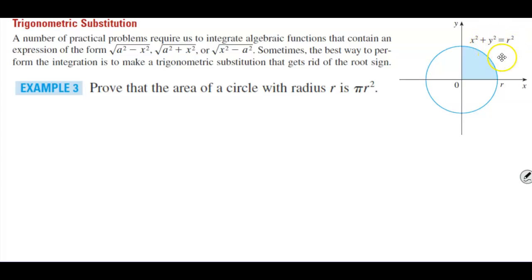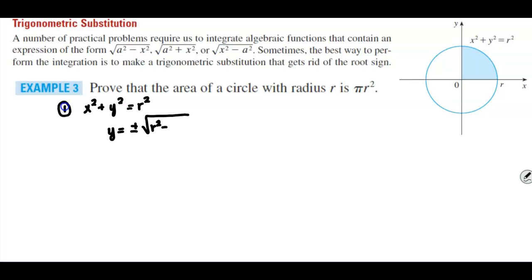Solving that equation for y gives us plus or minus the square root of r² minus x². Because we know that the circle is symmetric with respect to both axes, the total area is four times the area in one quadrant — you can see four pieces within that circle.